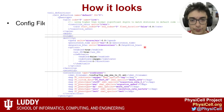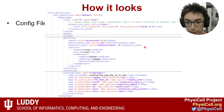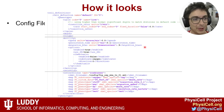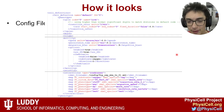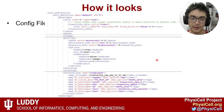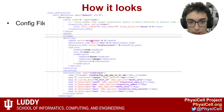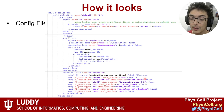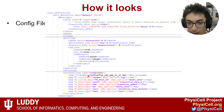Currently there is no user interface for SBML LibRoadRunner in PhysiCell Studio, so this will be more advanced and require manual coding in the configuration file. In the configuration file you can see the phenotype, motility, and other settings. There is an intracellular tab with type Roadrunner where you specify the SBML filename and the mapping, which I will discuss shortly.